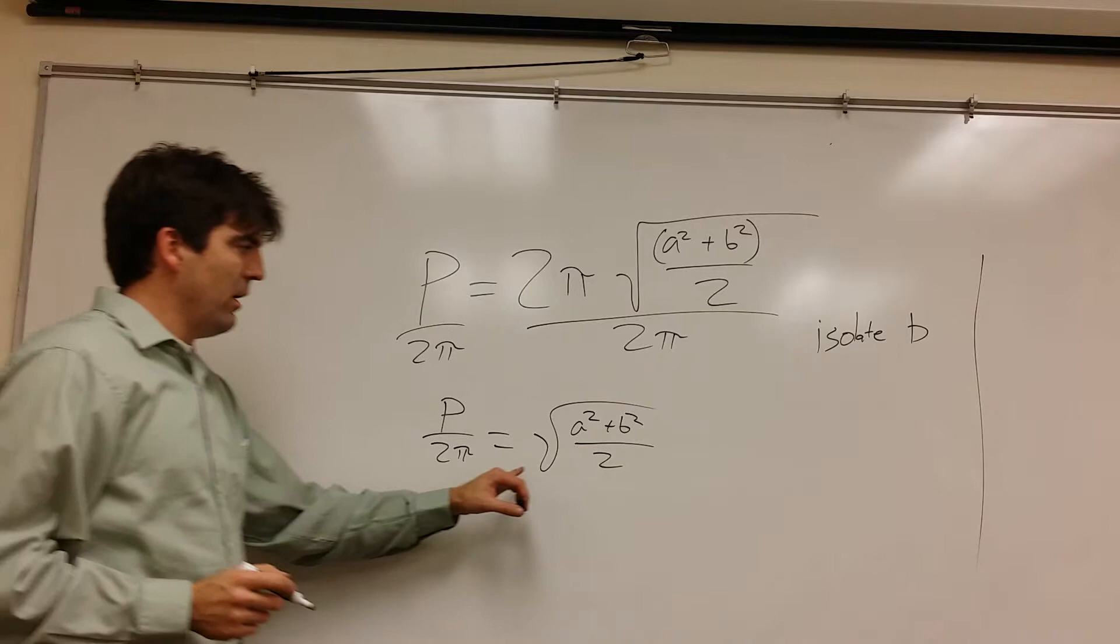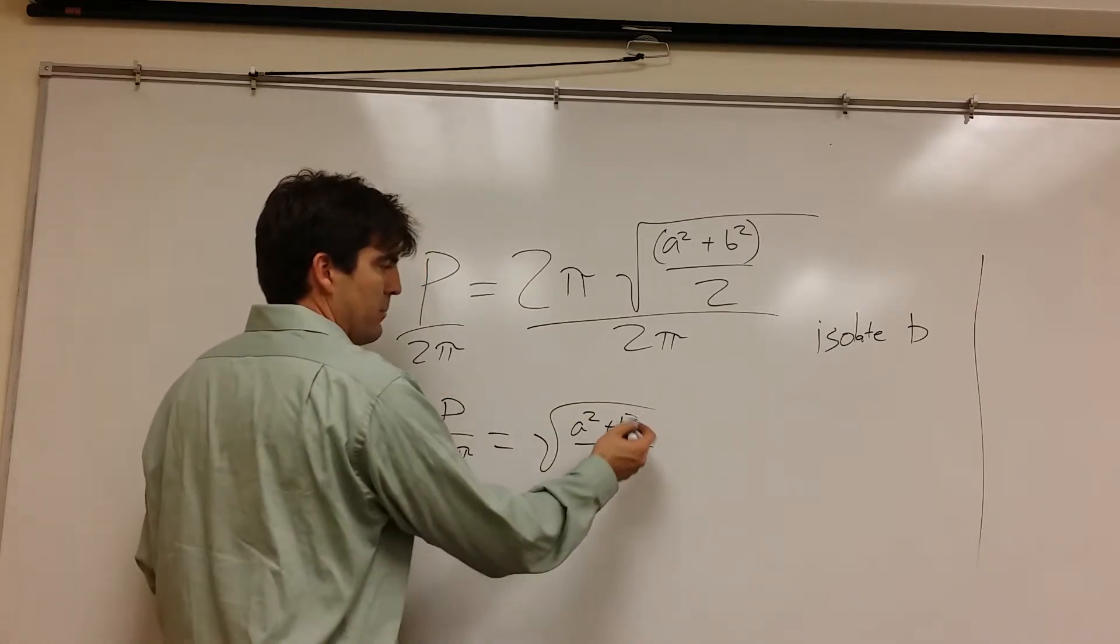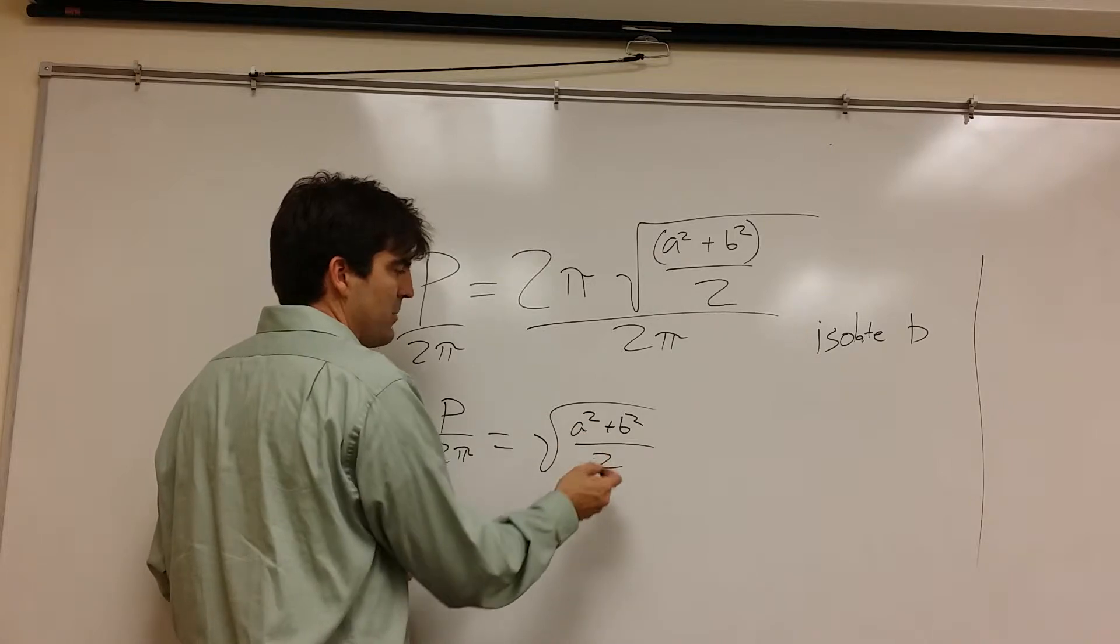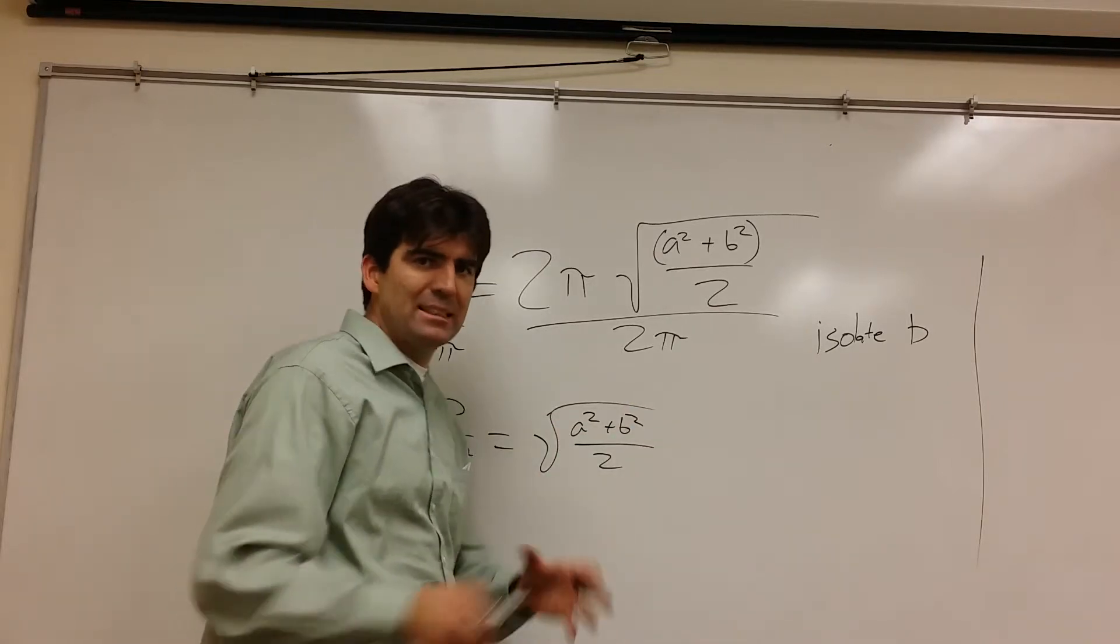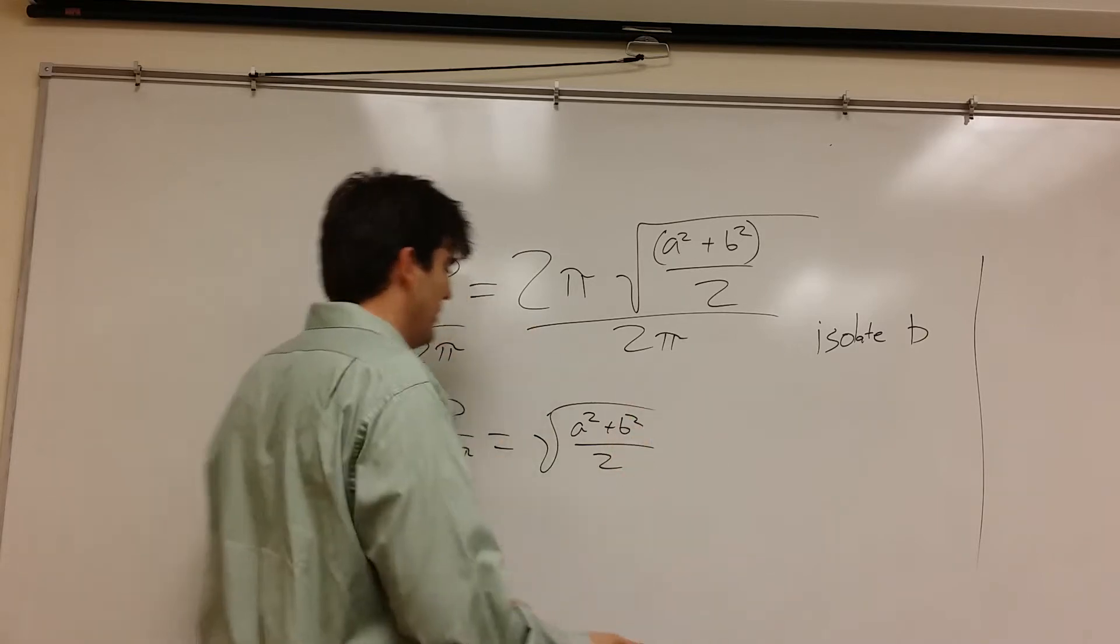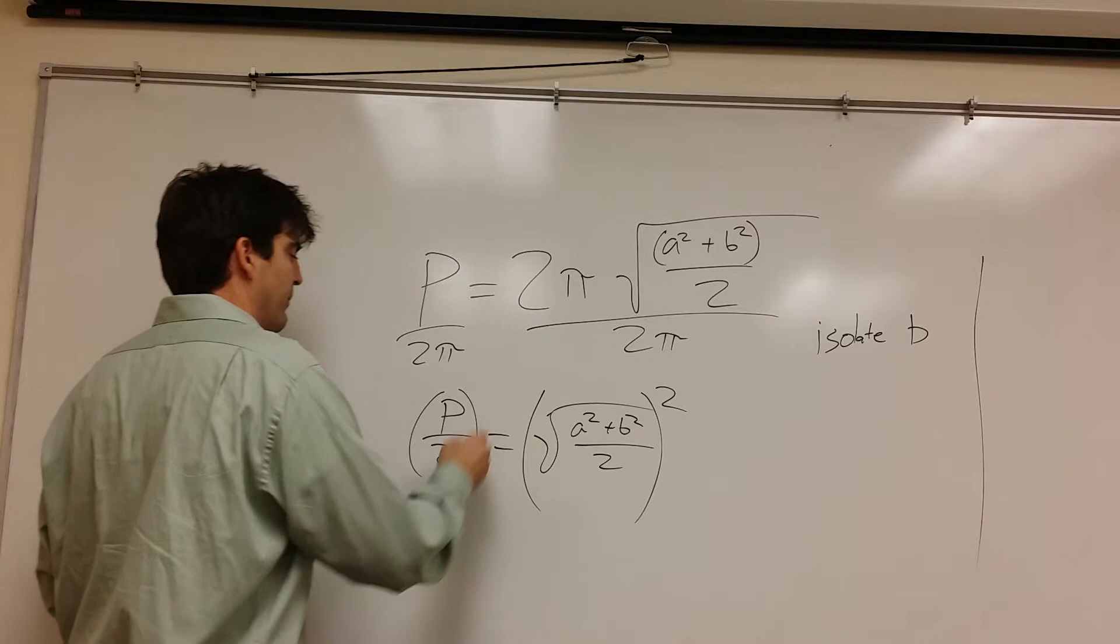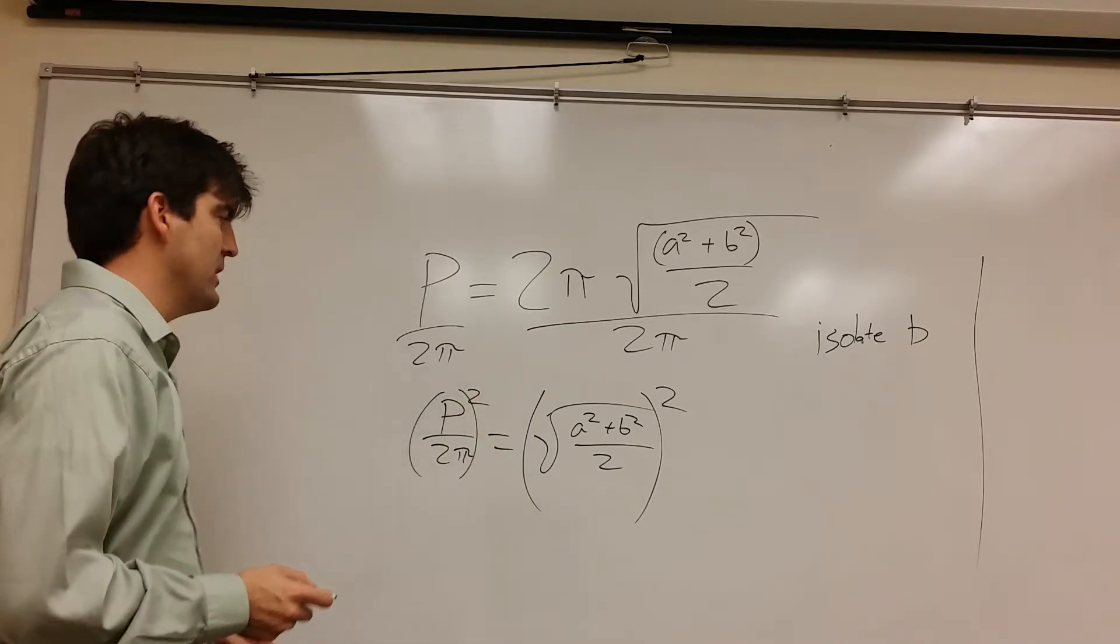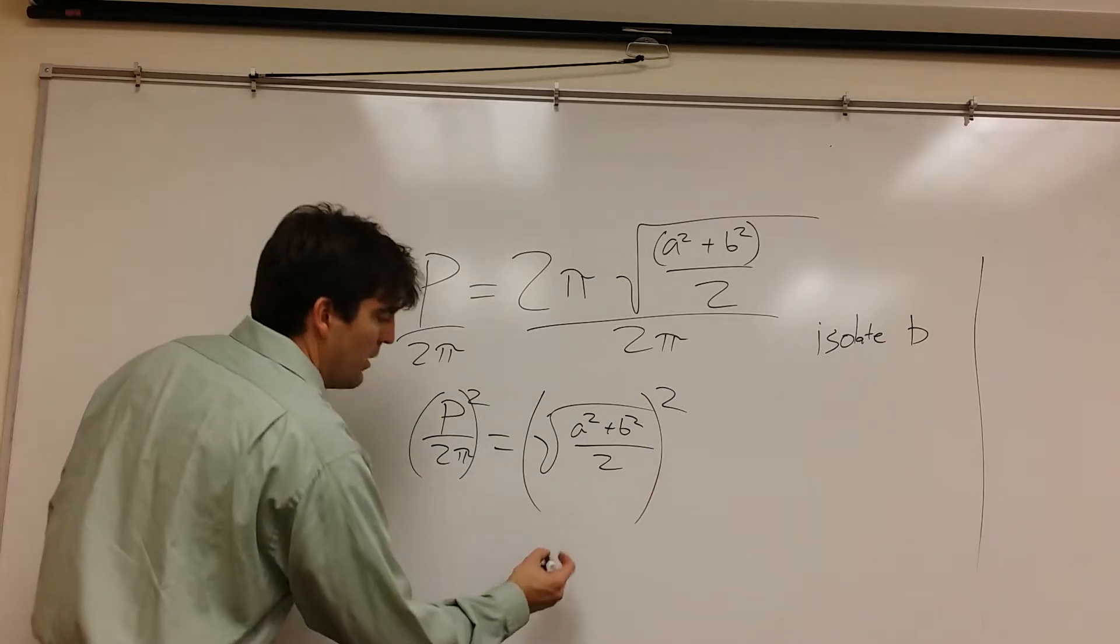So now I want to peel this layer off because if I was to do this one, it would be B squared plus A squared divided by 2, take the square root of it. So take the square root of it was the last layer of the onion, so I'm going to peel that off. So the way I'm going to do that is do the opposite of square root, which is square. I square both sides.